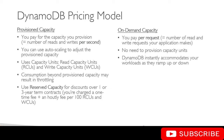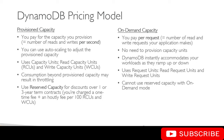DynamoDB instantly accommodates your workloads when they ramp up or ramp down very fast. On-demand capacity uses something called read request units and write request units. These are similar to read capacity units and write capacity units — RCUs and WCUs — but these are called RRU and WRUs. You cannot use reserved capacity with on-demand mode; if you're using on-demand mode, you cannot use the one-year or three-year term contract on your table.